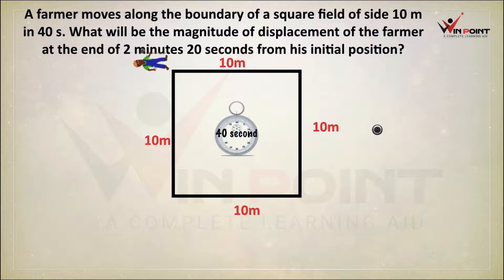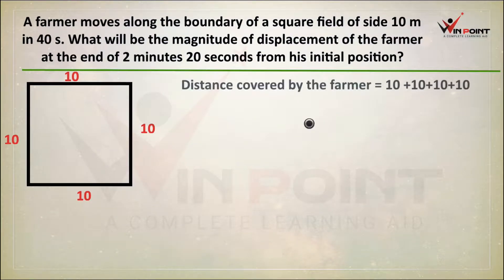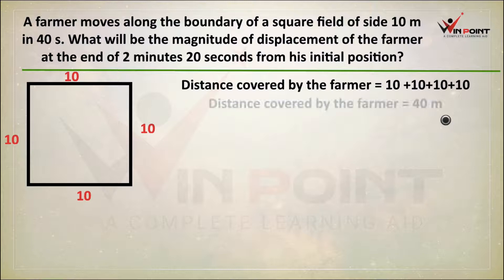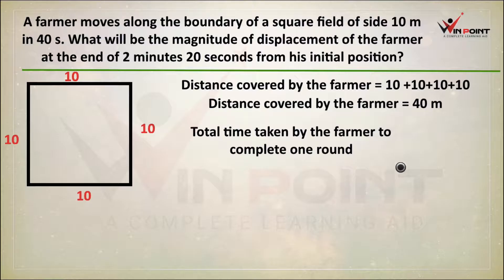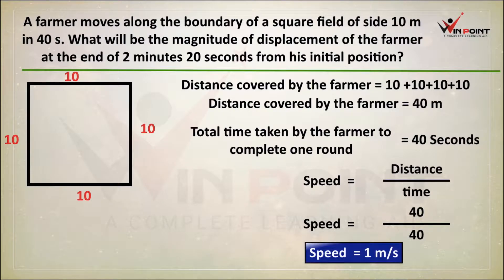How can we find the speed of the farmer? We know the distance and we know the time. Distance covered by the farmer equals 10 plus 10 plus 10 plus 10, which is 40 meters. Total time taken is 40 seconds. Speed equals distance divided by time — 40 meters divided by 40 seconds — so the speed is 1 meter per second.